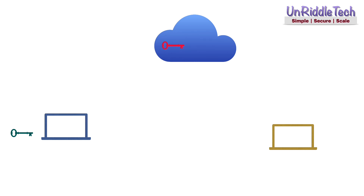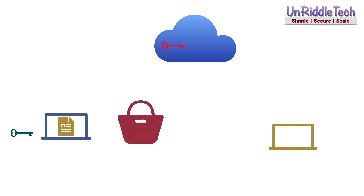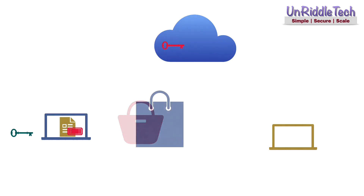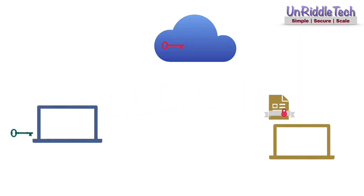You should have a key pair generated and should publish your public key so that it is accessible to anyone. You should also securely store your private key. You may input the file to the hashing algorithm and get the hash value. You may then input your private key and the hash value to the encryption algorithm — we call the output a digital signature. You may send the document along with the digital signature you just created.